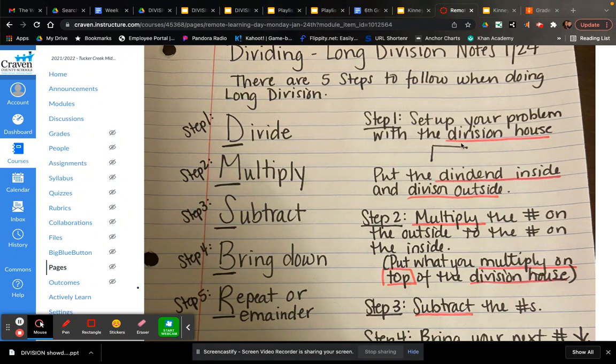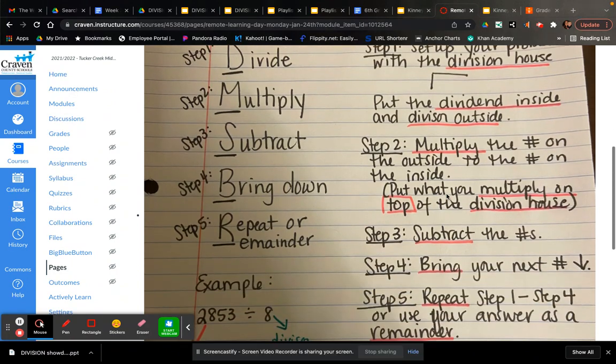Step one, you need to set up your problem with the division house. Even if it's written vertically, make sure that you use this. The dividend goes on the inside, which is your first number. The divisor goes on the outside, which is your second number.